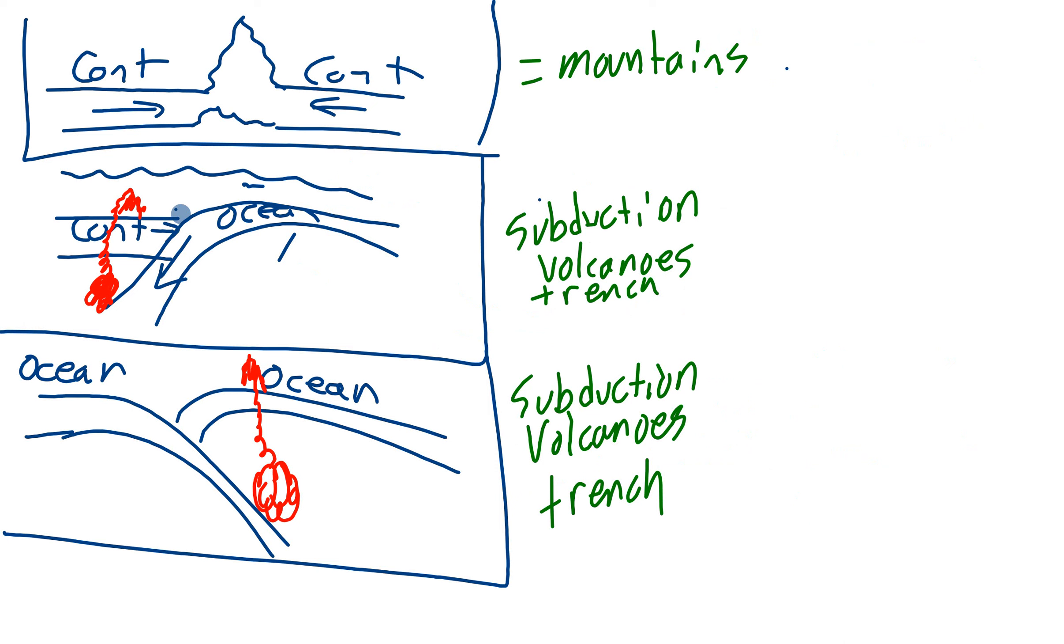So all three of these are convergent boundaries. If you have two continental plates crashing into each other, you're going to get mountains like the Himalayas.